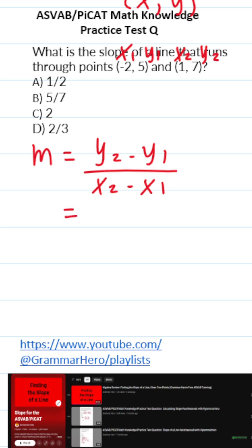Now that we know those values, we can go ahead and plug them in. Y2 is right here. It's 7 minus Y1. It's 5 over X2. X2 is right here. It's 1 minus X1, which is negative 2.